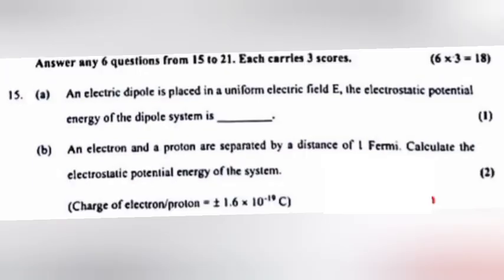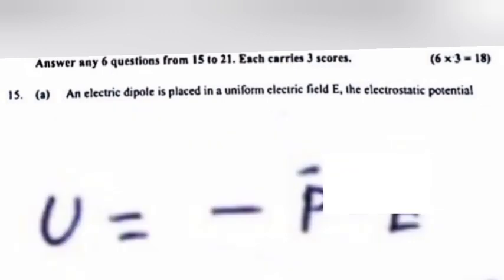Question 15-16 A: An electric dipole is placed in a uniform electric field. The electrostatic potential energy of the dipole system is? Answer: U is equal to minus P dot E.